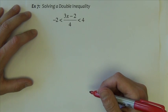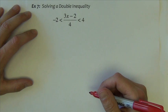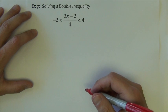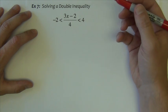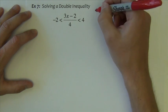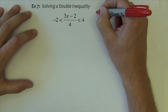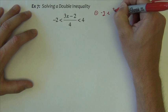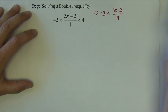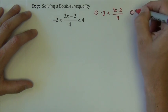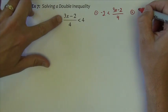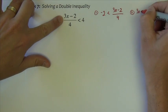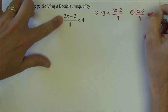Example 7, solving a double inequality. These show up quite often and are sometimes a source of confusion. When you have a double inequality, it of course represents two inequalities. The first inequality is the one on the left, negative 2 less than 3x minus 2 divided by 4. The other inequality is the one on the right, 3x minus 2 divided by 4 is less than 4.